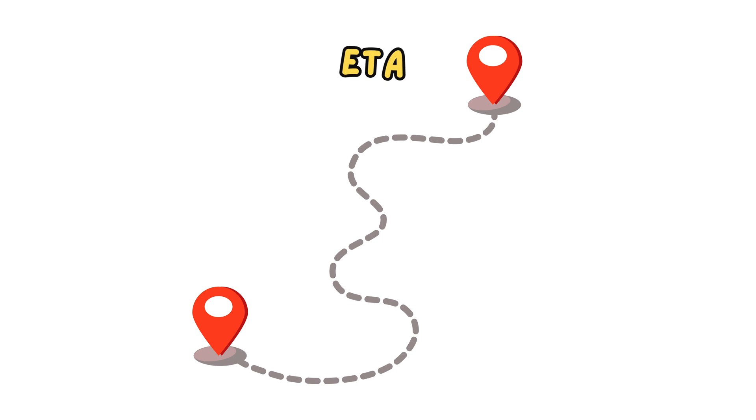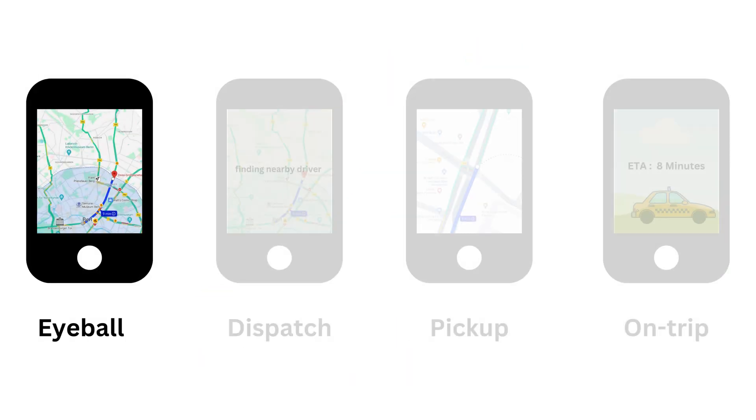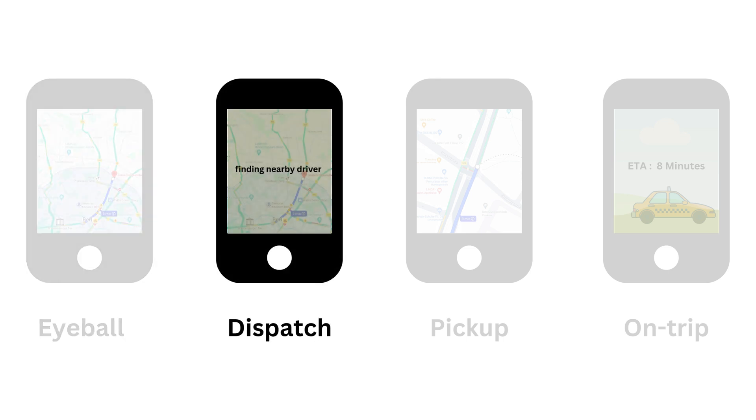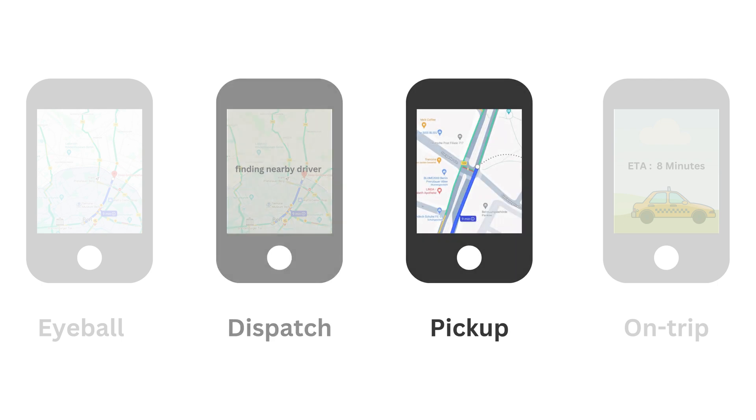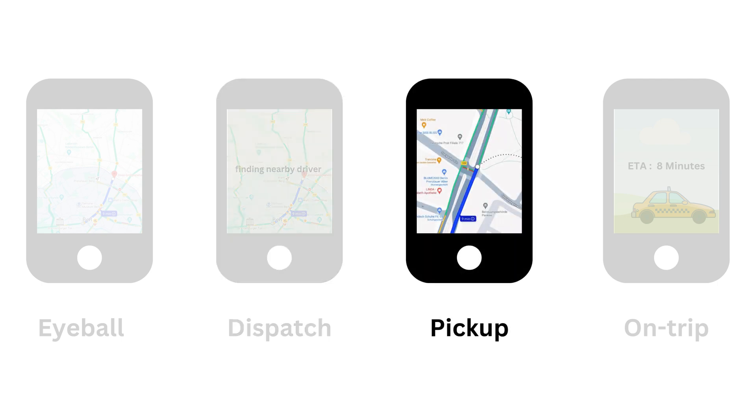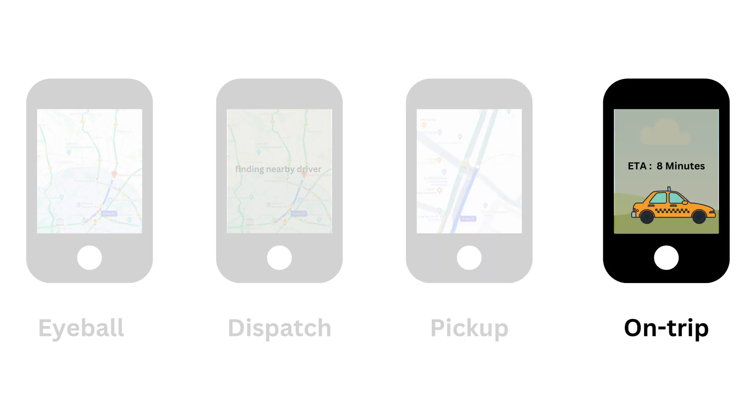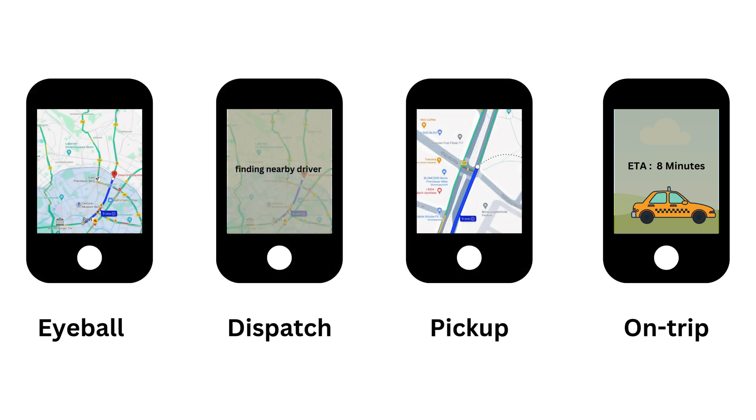Uber computes ETA in four scenarios. Eyeball, when the rider enters a destination in the app. Dispatch, to find a car to pick up the rider in the shortest waiting time. Pickup, to find the time needed to pick up the rider. On Trip, to provide live updates on time to reach the destination. A single trip usually takes around 1,000 ETA requests.